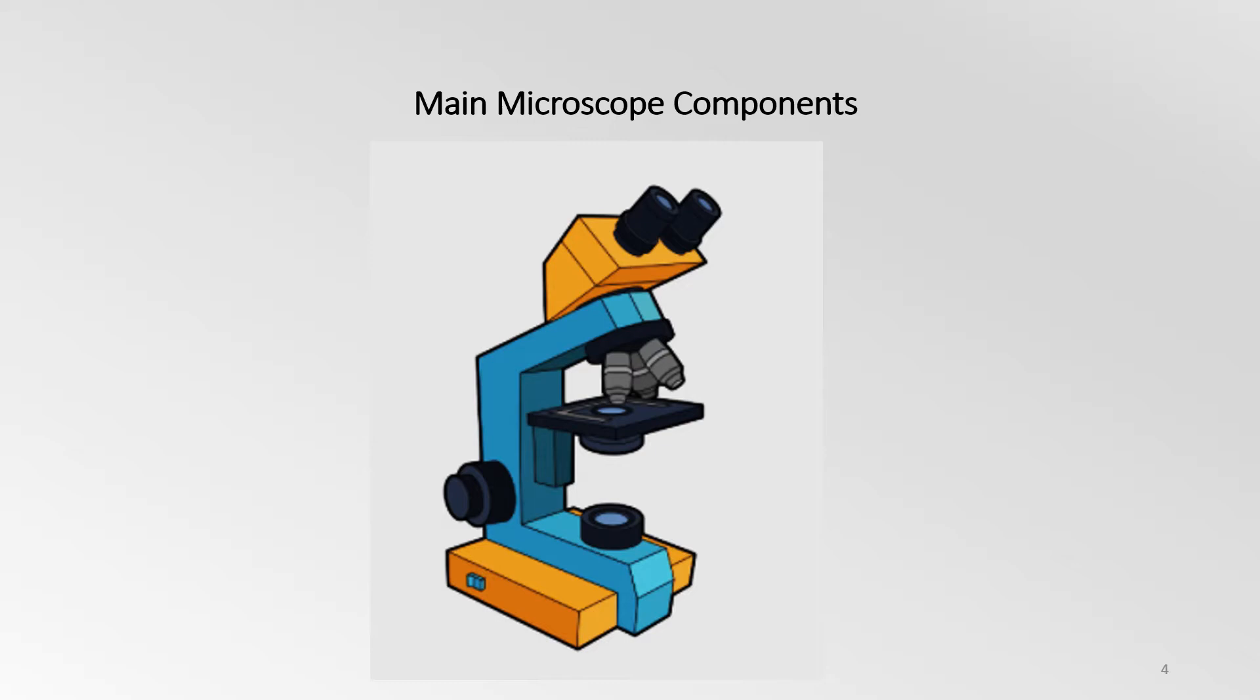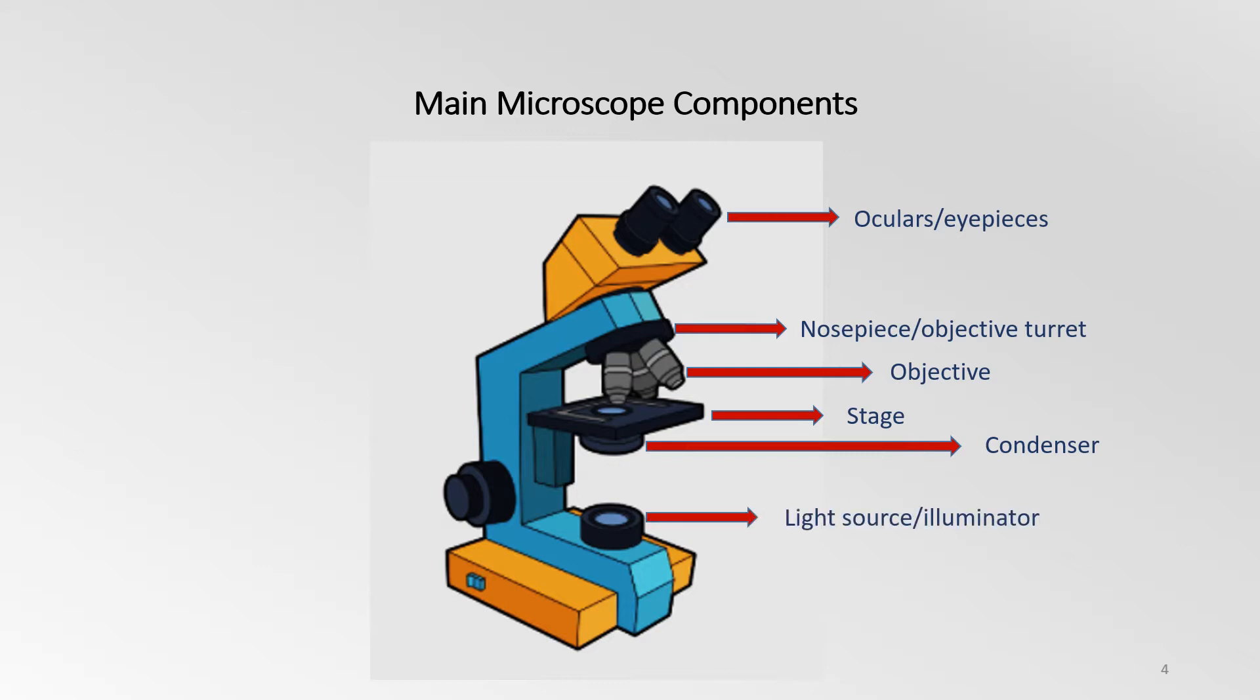All microscopes have the same main components, albeit in different configurations. It is essential that anyone using a microscope knows what these are. The oculars or eyepieces are the lenses that you look through to observe your sample. The nosepiece is the rotating portion of the microscope that holds the objective lenses. All microscopes are designed to include the stage where the specimen is placed for observation. The condenser is used to collect and focus the light from the illuminator onto the specimen. The light source is required for sample illumination. The coarse focus knob is meant to bring the sample mostly in focus, and the fine adjustment is used to bring sample into sharper focus.